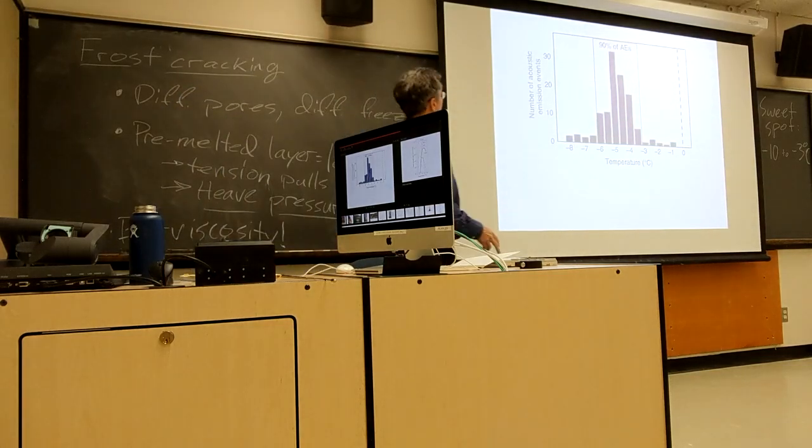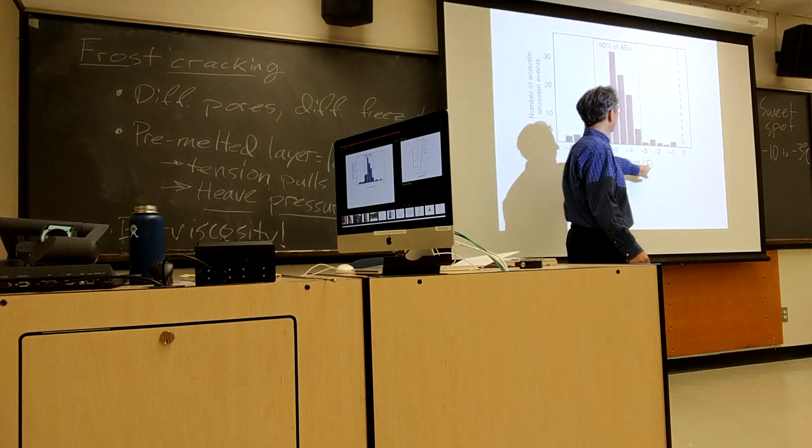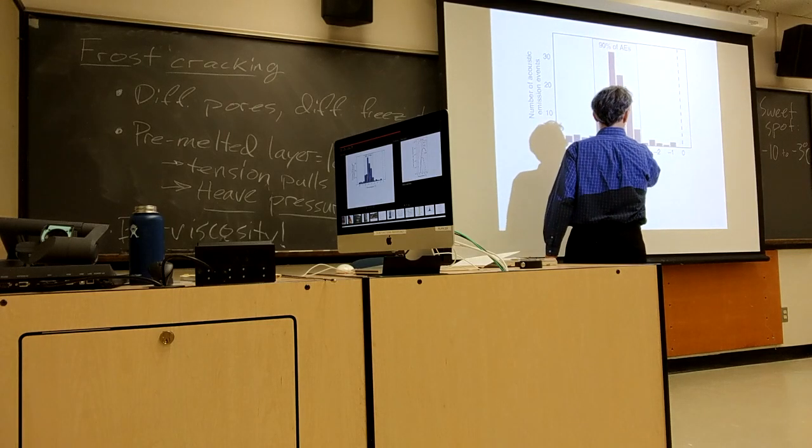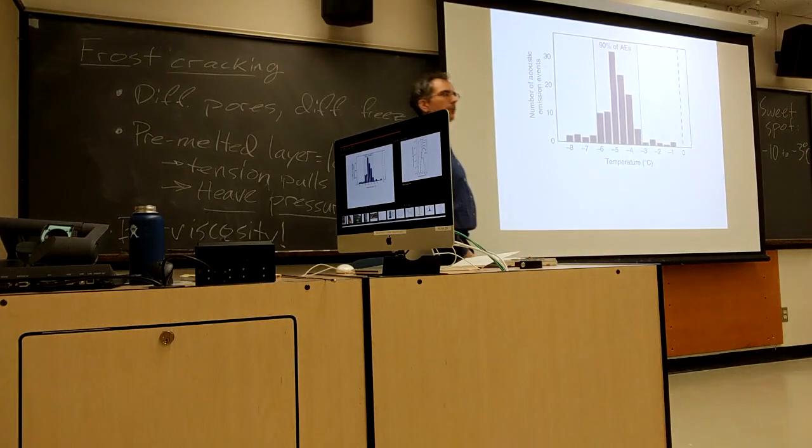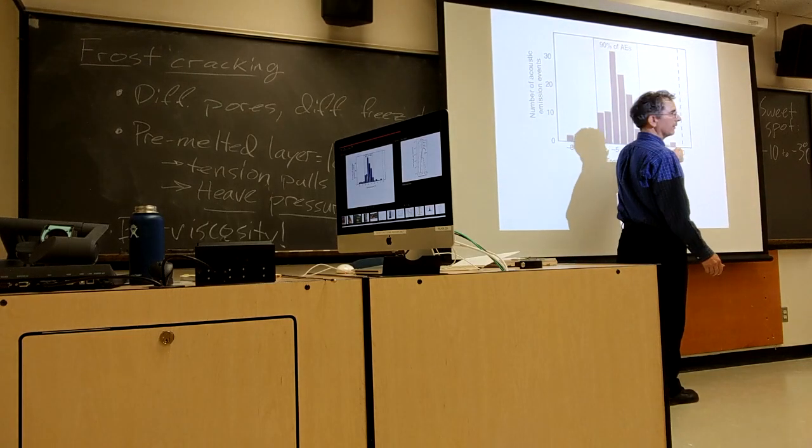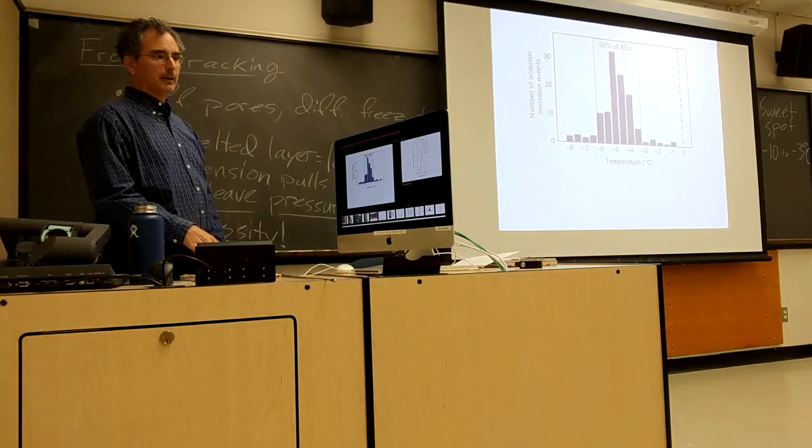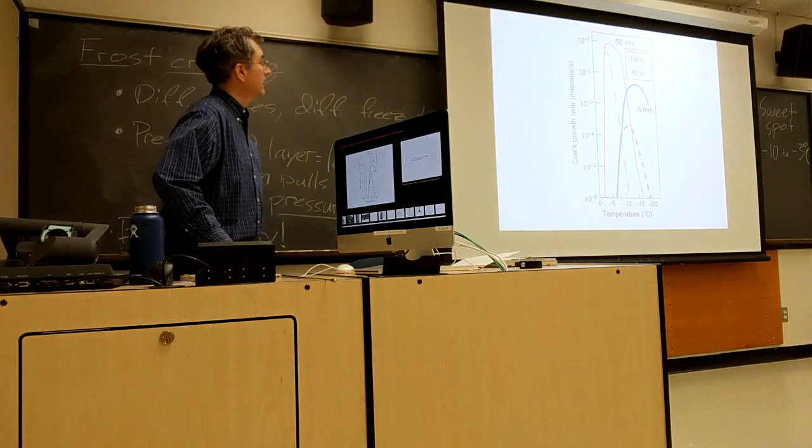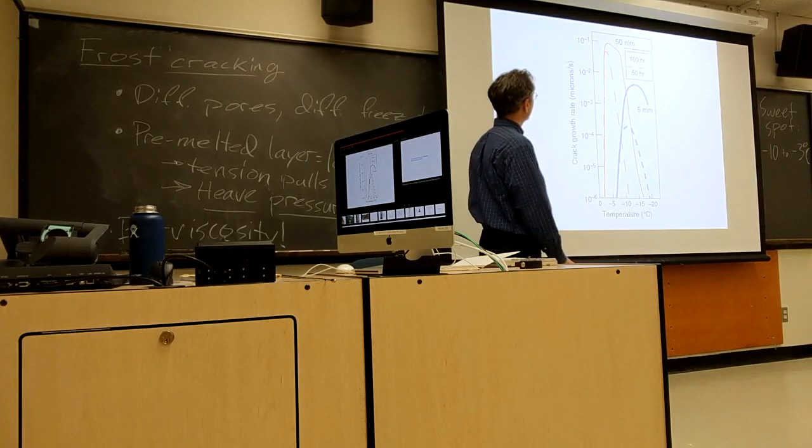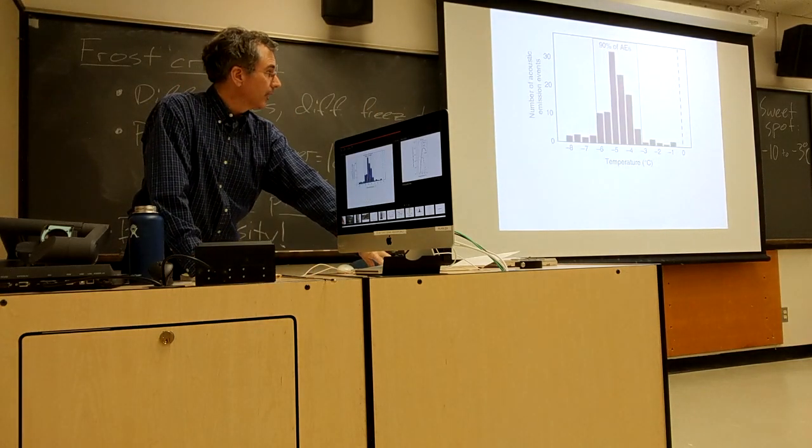And so here we have a histogram of the number of acoustic emission events. Number of crack sounds versus temperature here. And we see here that the sweet spot is more like minus, you know, cold. Well, so minus three, minus four. So, maybe a little narrower sweet spot, although we're still getting frost cracking down to around minus 8 degrees C. We're actually even getting frost cracking just a little bit up to just below zero. And we can also look at the crack growth rate versus temperature for two very different pore sizes. But that's, I think, maybe less interesting than just that. And I love this experiment.